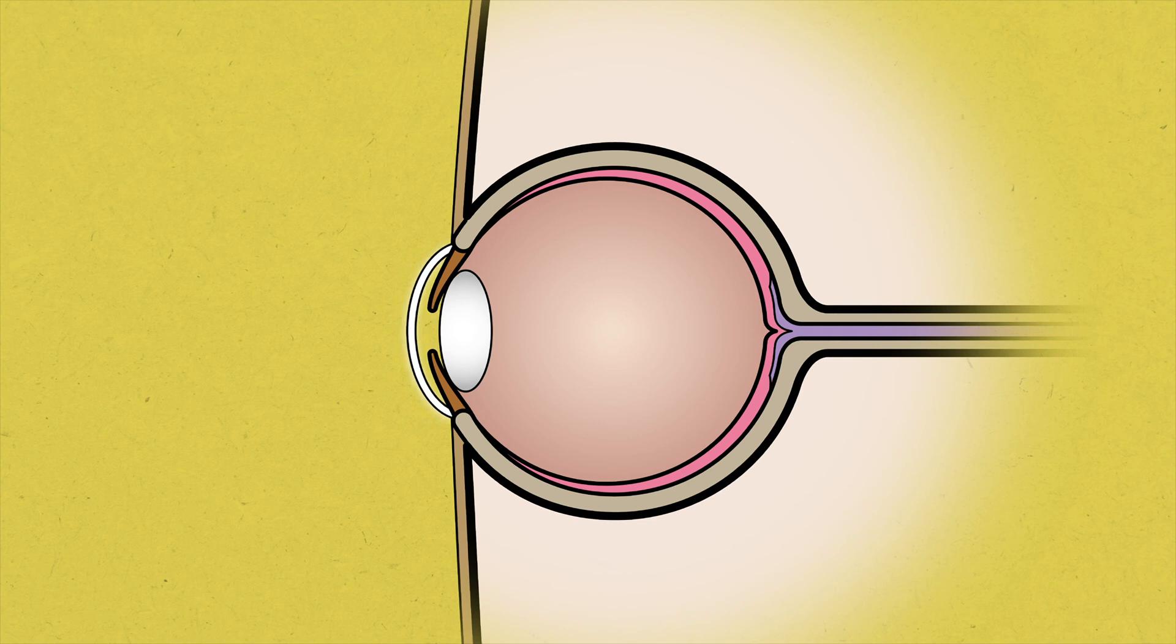We have a lens at the front of the eye and that directs light onto a screen at the back that we call the retina. When that light hits the retina, the light is converted into an electrical signal and then that is passed down the optic nerve to the brain so that you can see.